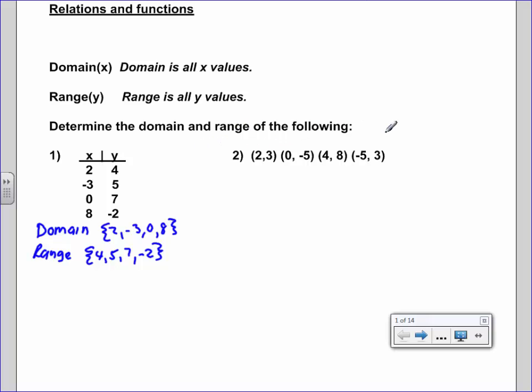Now they might give you a set of coordinates or ordered pairs like this, and as you know each of these is an XY pair. So if they ask you domain in this problem, you'd say okay, the domain is just go across: 2, 0, 4, negative 5.